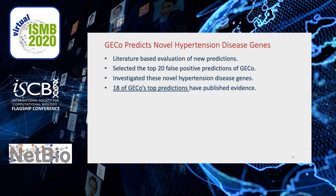We also evaluated the quality of Gecko's novel predictions of hypertension genes by performing a literature-based evaluation of new predictions. We selected the top 20 false positive predictions of Gecko based on the prediction probability. Those top 20 genes were not annotated for hypertension-related disease at RGD and were not included in our ground-truth gene set. We found that 18 of Gecko's top predictions have published evidence, in most cases not merely expression-based, that the genes encode hypertension-related proteins.